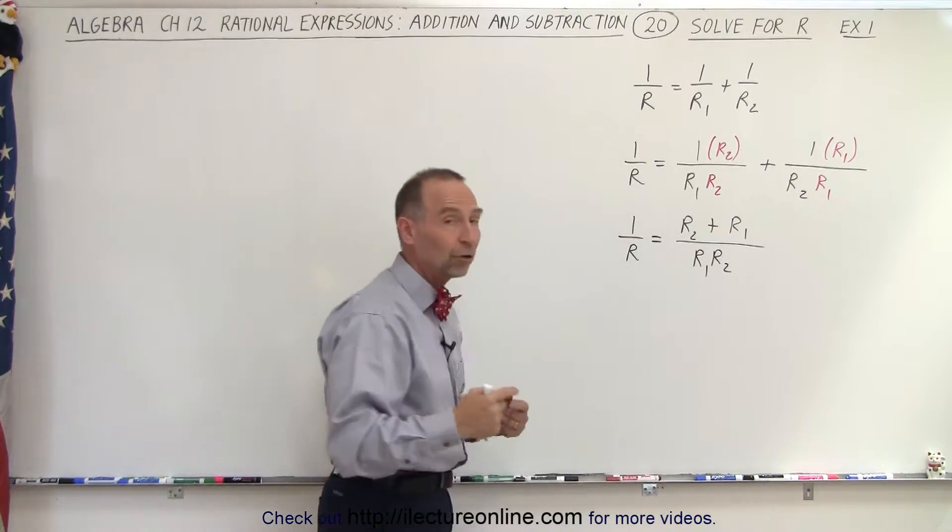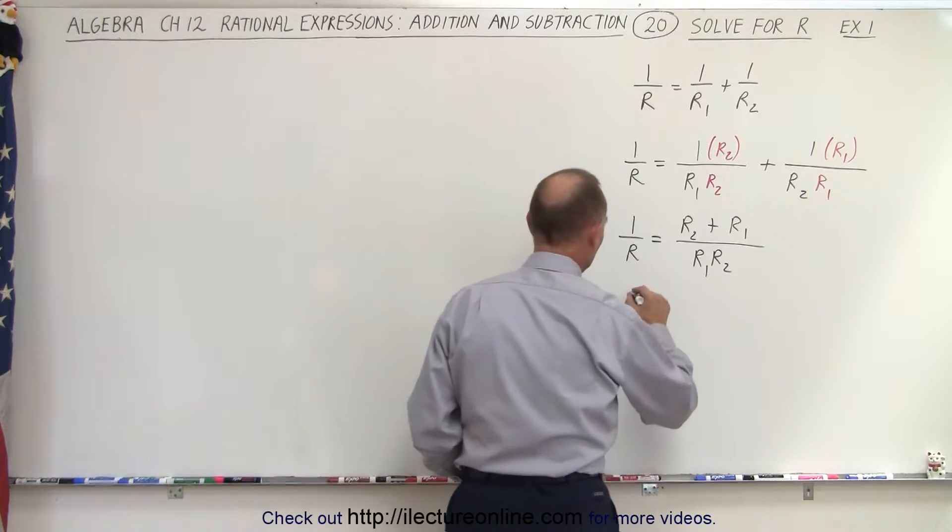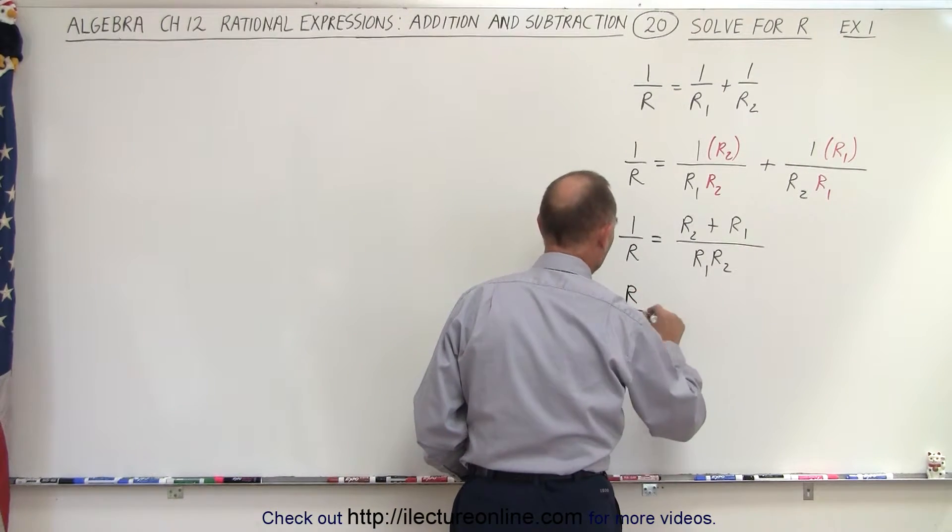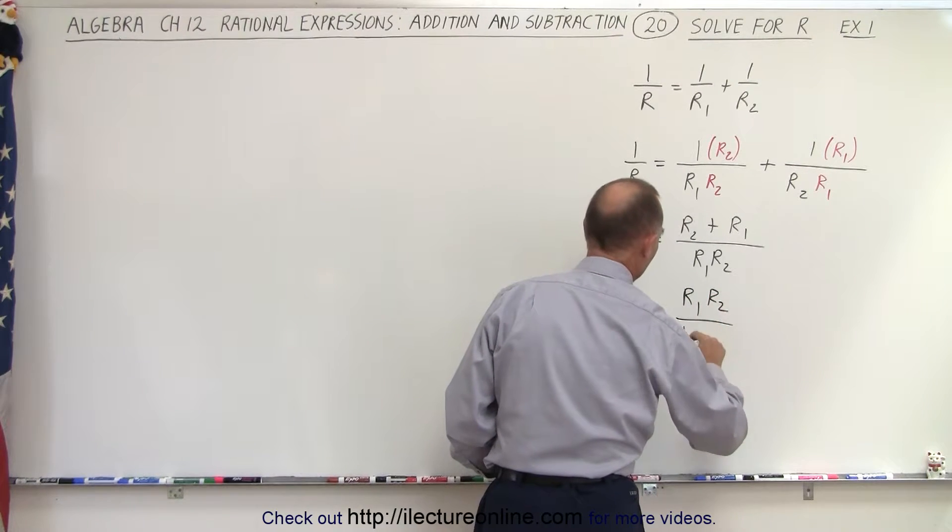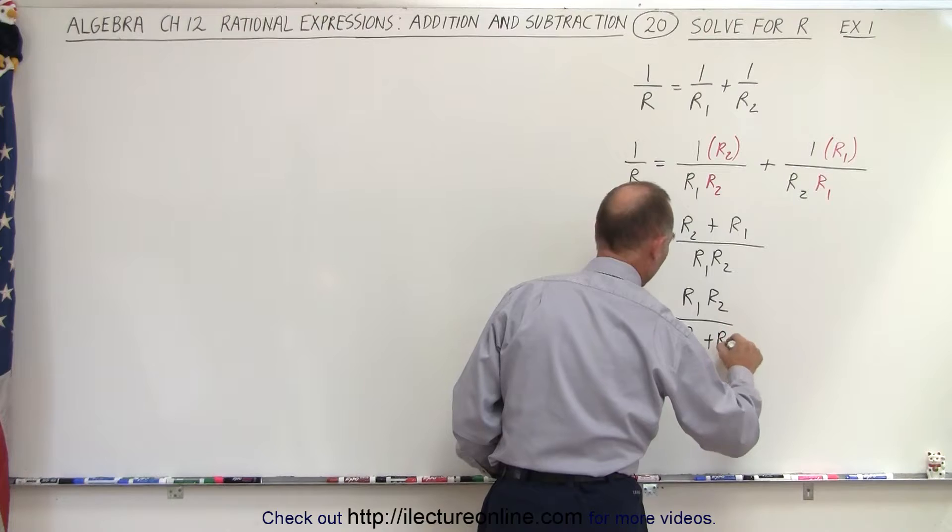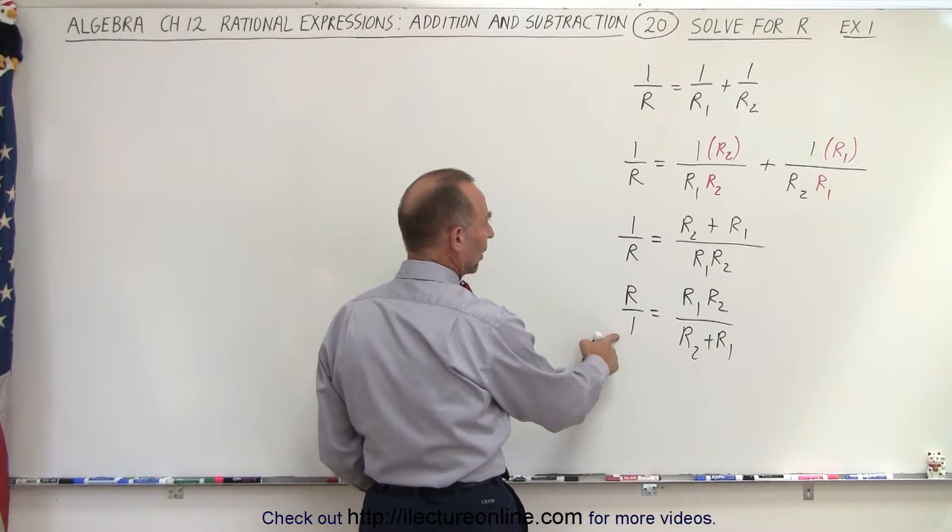And then all we have to do is take the inverse of both sides, which means that we have r over 1 equals r1, r2, divided by r2 plus r1. And finally, we can drop the 1 here.